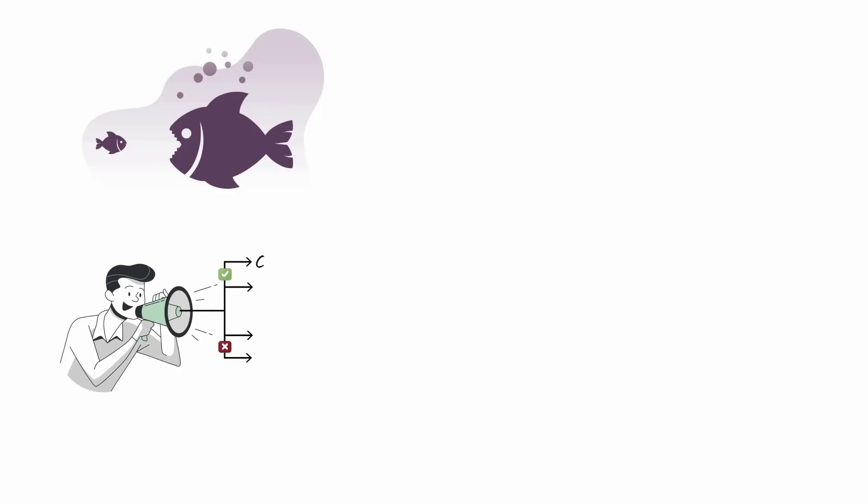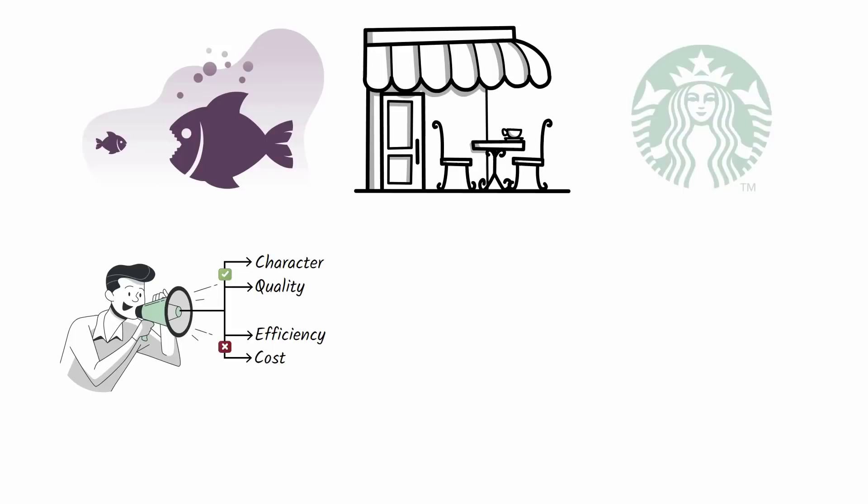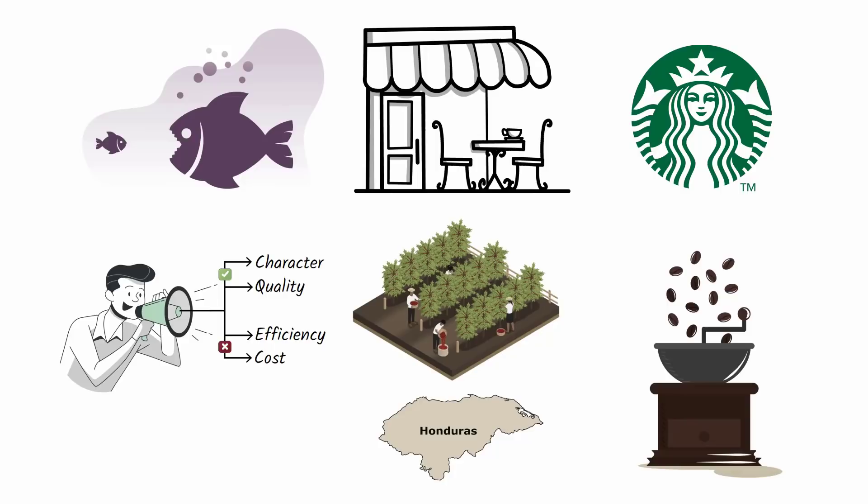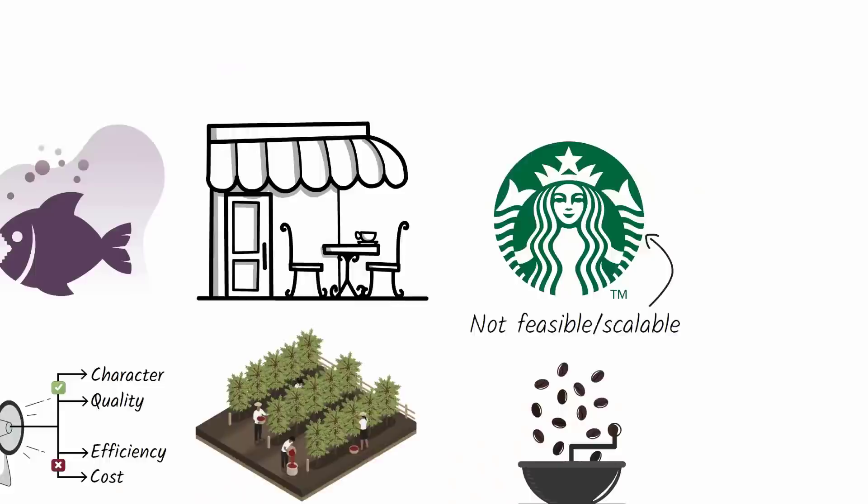If you're facing a giant business competitor, center your marketing campaign around character and quality instead of efficiency and cost. You want to be like a small coffee shop that competes against large coffee chains like Starbucks by promoting the fact that they use coffee beans from a small family farm in Honduras and roast their beans on site at the coffee shop for maximum freshness, a tactic that just isn't feasible for a massive coffee shop chain like Starbucks.